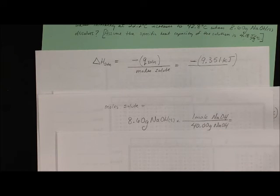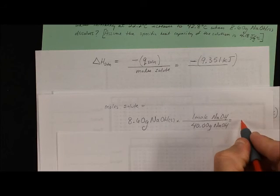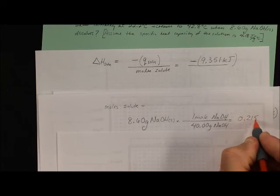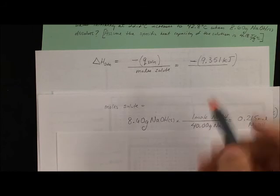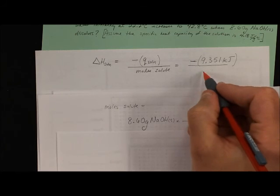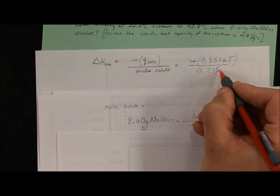Punch that into our calculator: 8.6 divided by 40, you get 0.215 moles of sodium hydroxide. That is going to be our denominator, 0.215 moles.